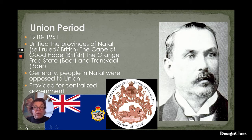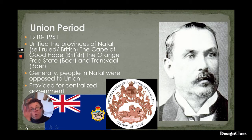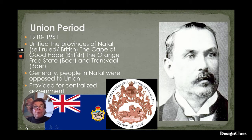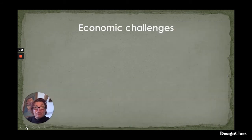What Union did was provide for centralized government. When the different colonies that made up Union went into forming the Union, it meant that the government was centralized literally in Pretoria.